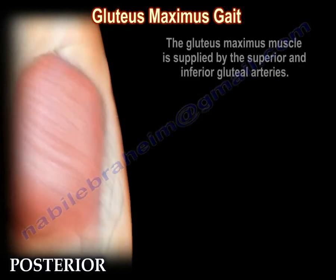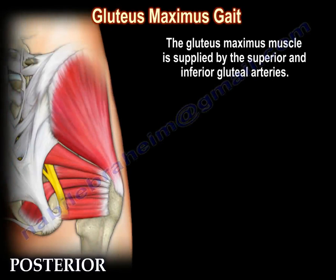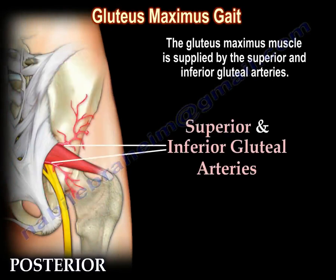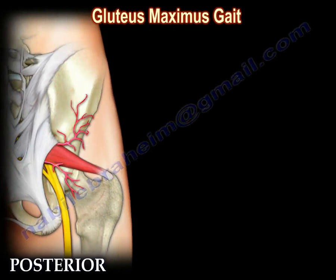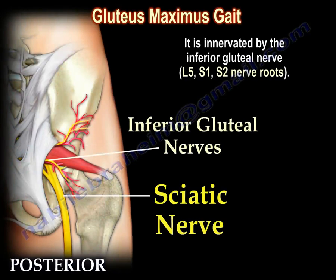The Gluteus Maximus muscle is supplied by the superior and inferior gluteal arteries. It is innervated by the inferior gluteal nerve, L5, S1, and S2 nerve roots.